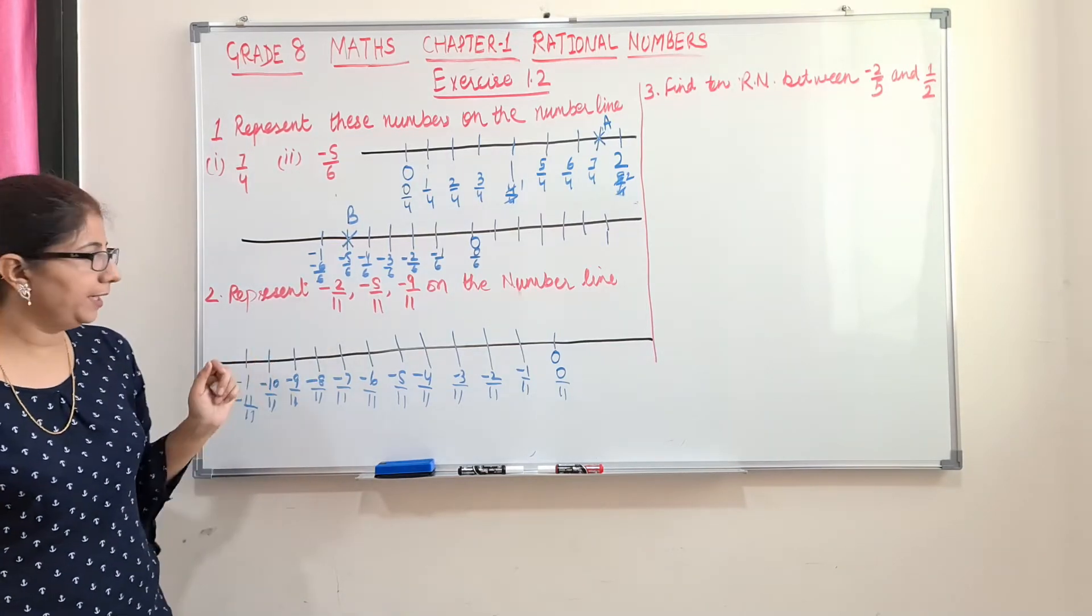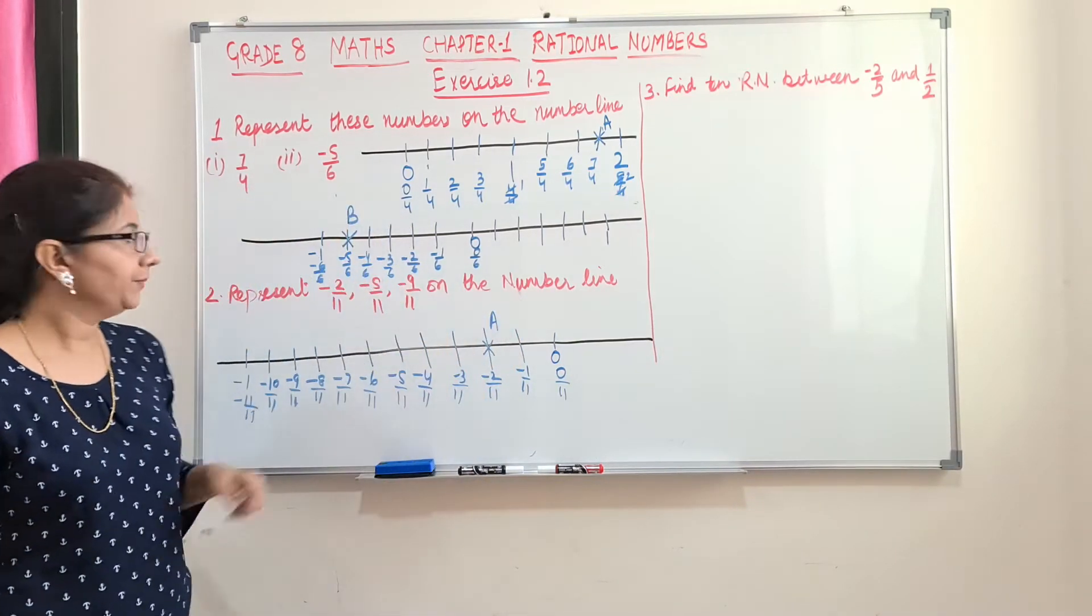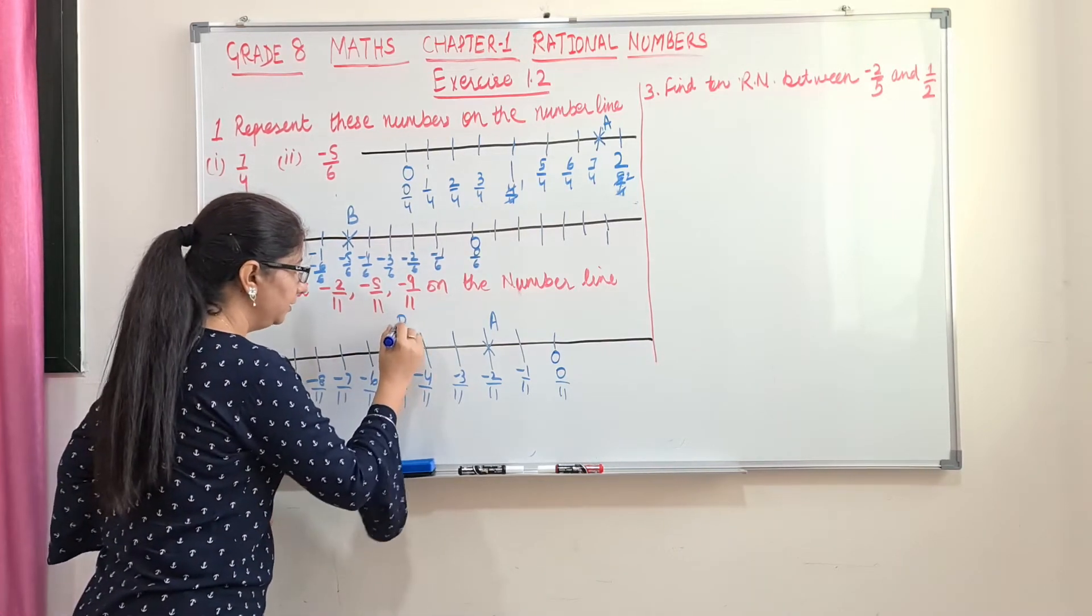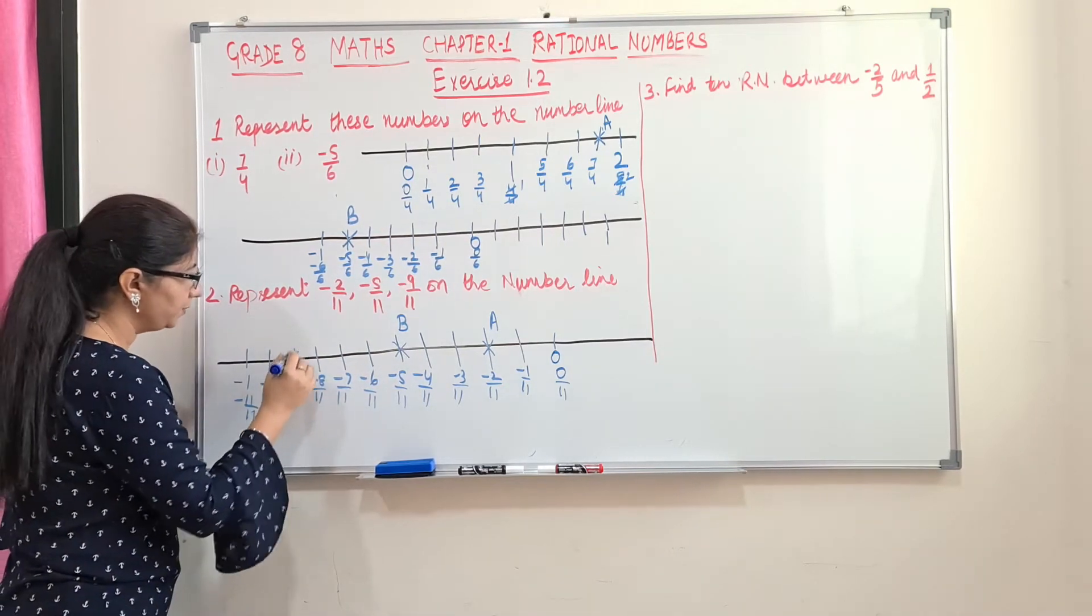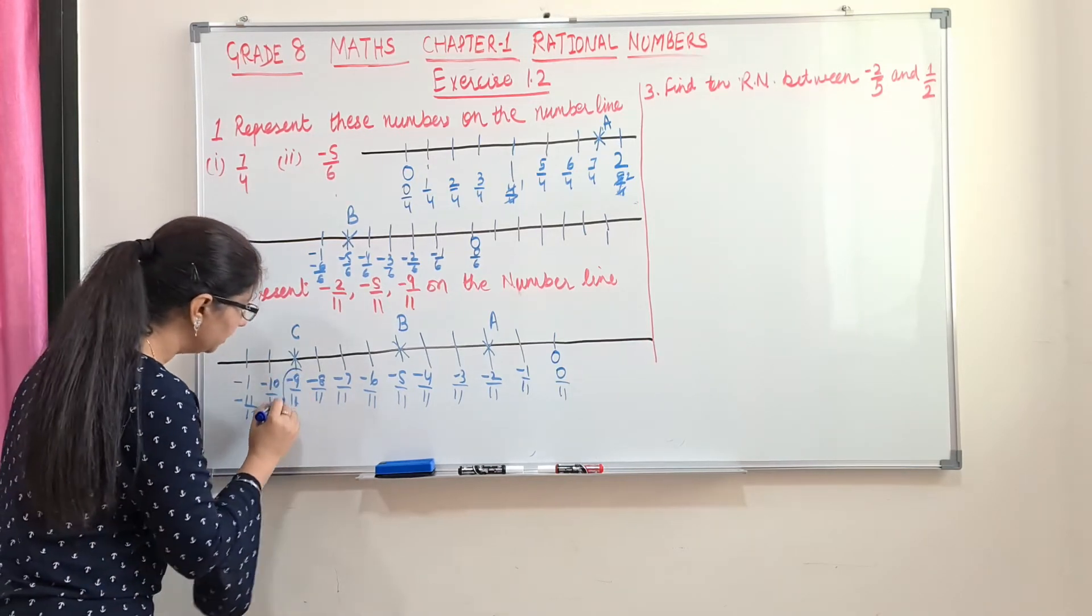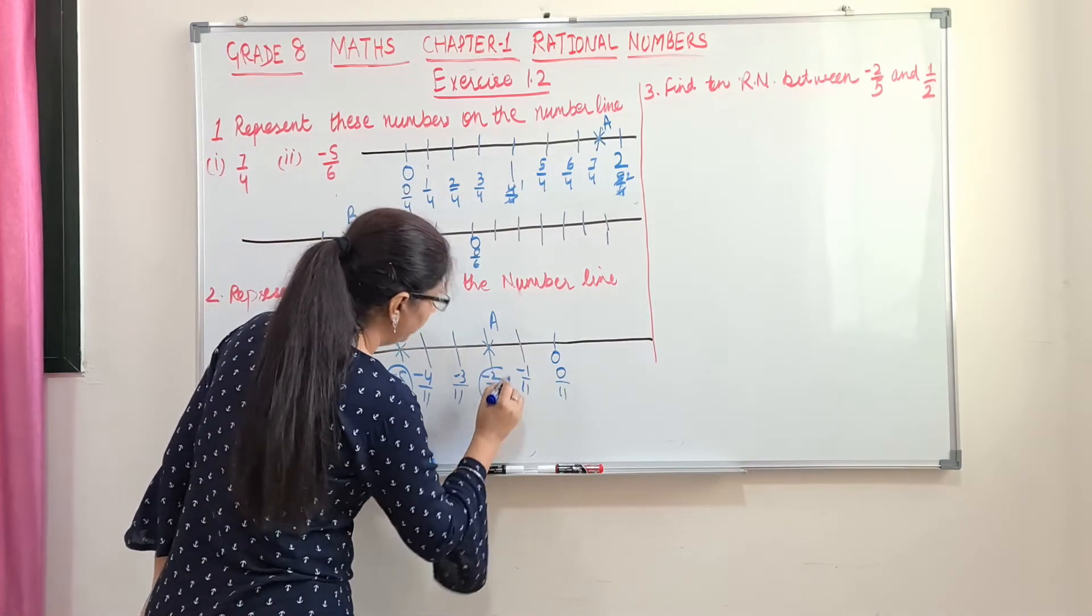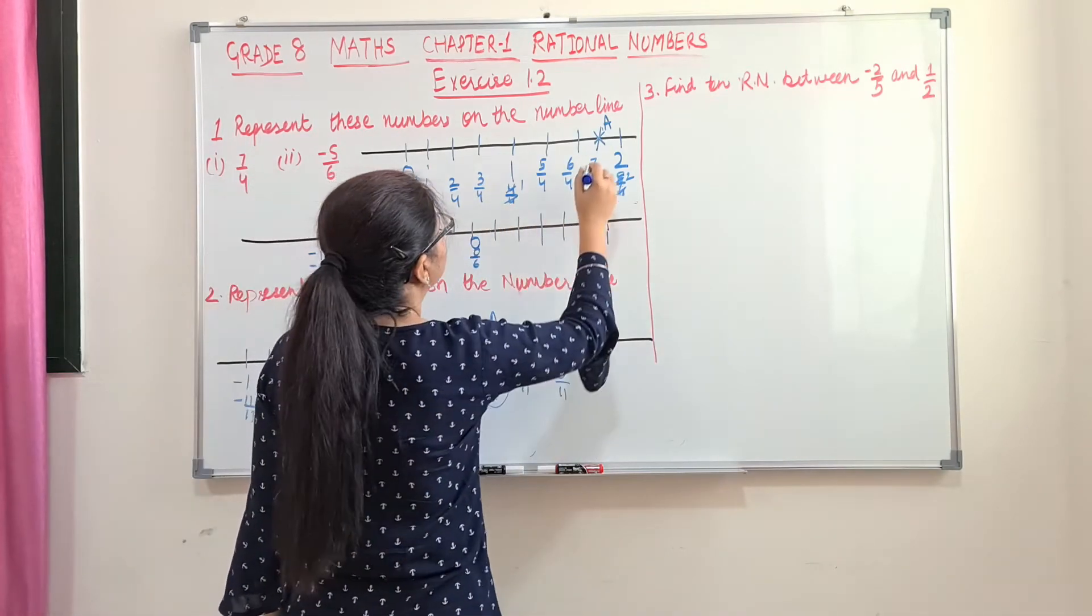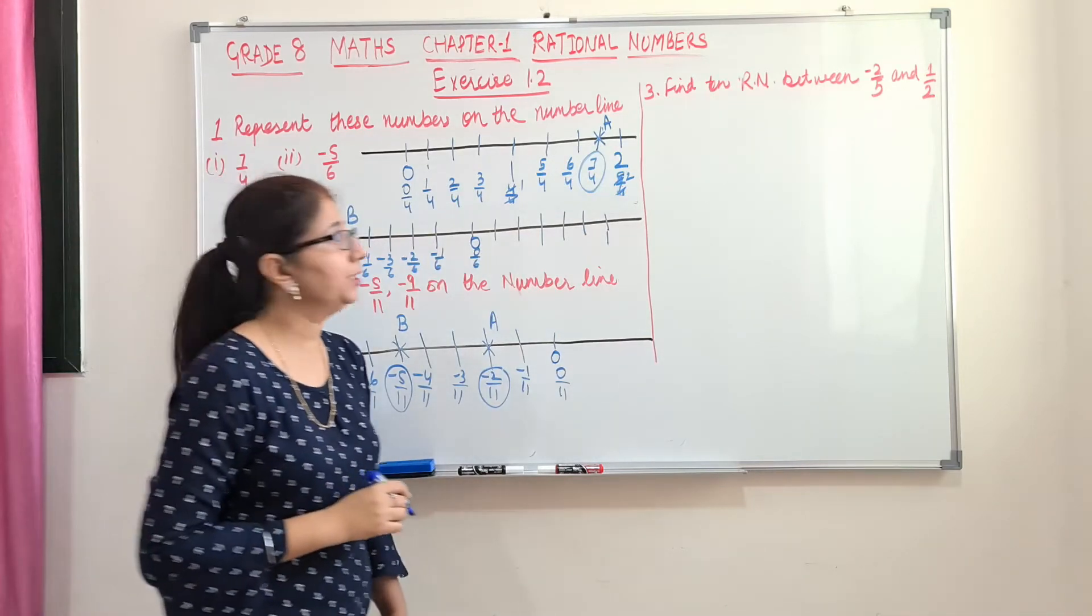So what are our numbers? Minus 2 by 11. Where it is? Here. Mark it as A. Next is minus 5 by 11. Minus 5 by 11. Write it as B. Minus 9 by 11. So here it is minus 9 by 11. And this should be represented as C. You can also circle these numbers just to make it clear to your teacher that you have marked the correct numbers. Is it clear? So now let's go to next question.